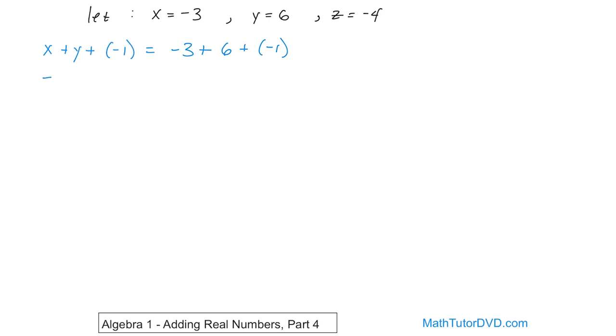So what do we get? We're going to go left to right when we do this addition. Negative 3 plus positive 6, we're adding different signs together, so we have to subtract. 6 minus 3 gives you 3, and then you've got to figure out, is it going to be positive or negative? Since 6 is bigger, it's going to be positive. Then we'll have this negative 1 adding on for the next step.